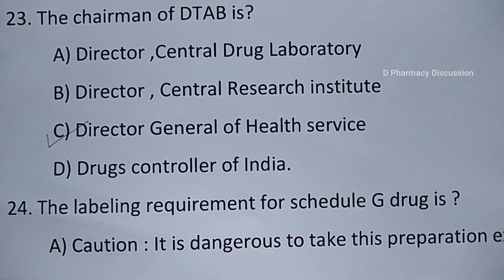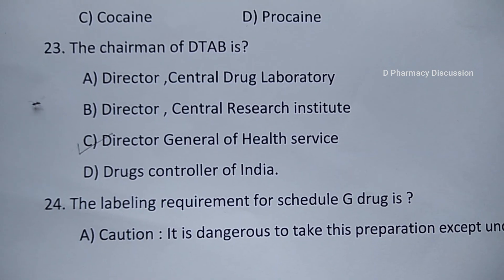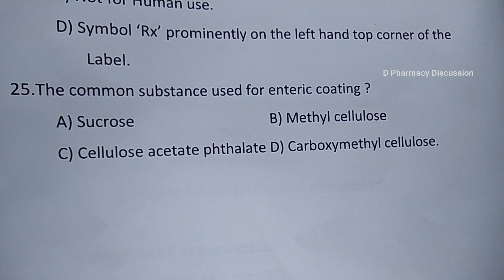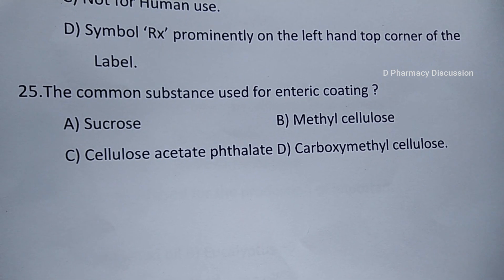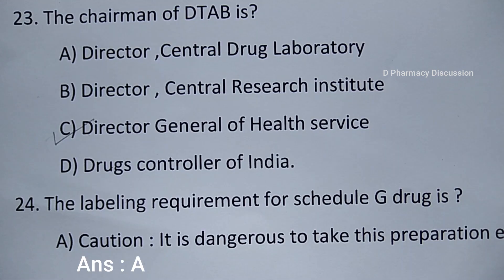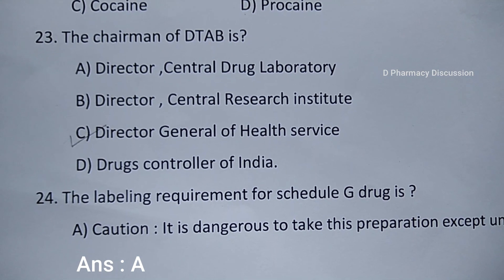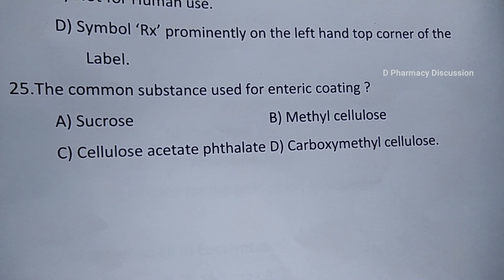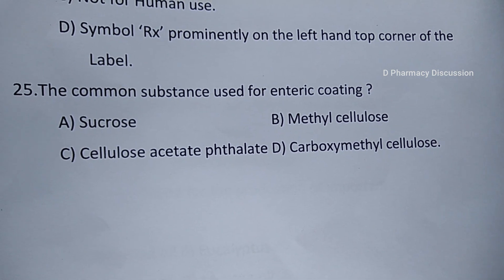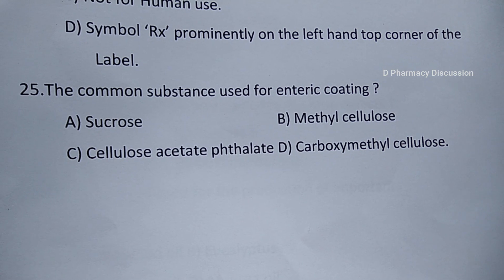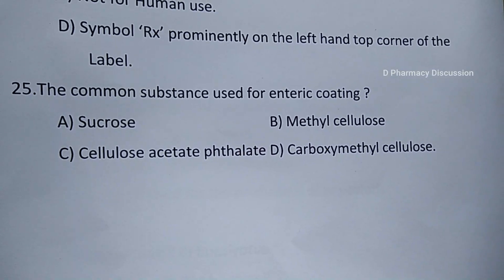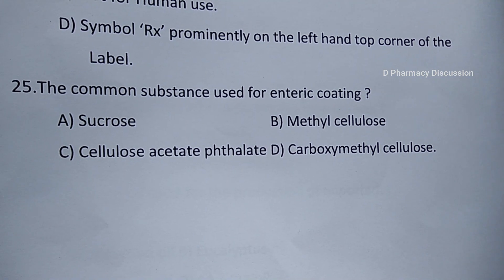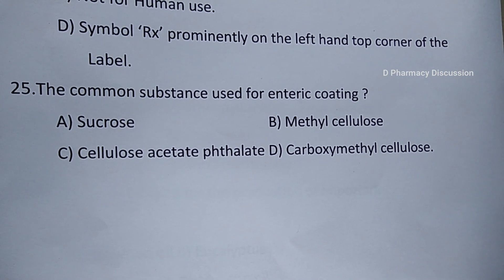Question number 24: the labeling requirement for Schedule G drug is — option A. 'Caution: it is dangerous to take this preparation except under medical supervision,' option B. 'Warning: to be sold on the prescription of a registered medical practitioner only,' C. 'Not for human use,' and option D. Symbol Rx prominently on the left hand top corner of the label. Correct answer is option A. Options B and D are the labeling requirements for Schedule H drugs, and option C is the labeling requirement for veterinary drugs.